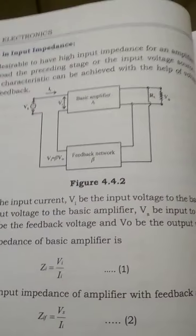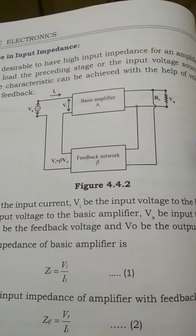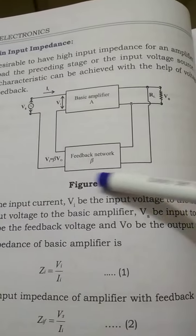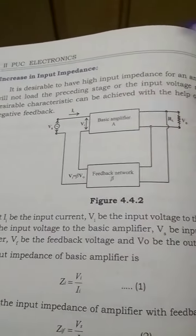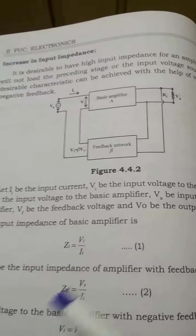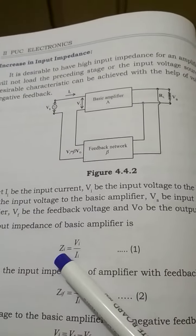It is going back to the input. For any amplifier, it is required that the input impedance should be high. By providing voltage series negative feedback, we can increase the input impedance. Input impedance Zi for the basic amplifier...